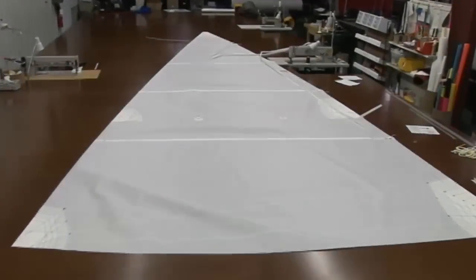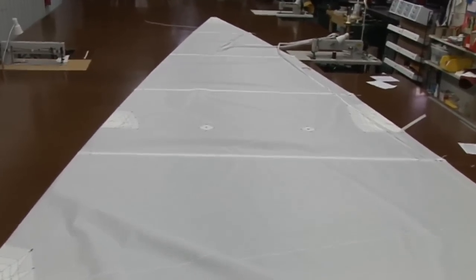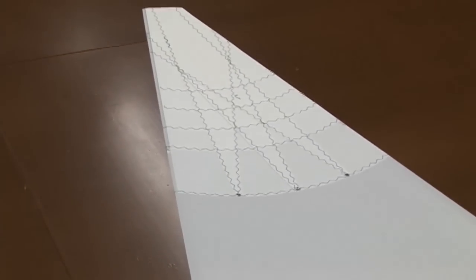Here it is all complete. The only thing left to do is to finish off the batten pockets, install the rings, install leech line, the headboard, and the edge tapes.